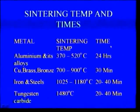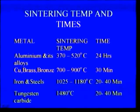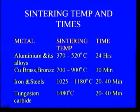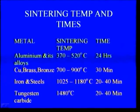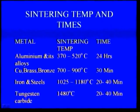Now we see the sintering temperature and times of different metals. For aluminum and its alloys, the sintering temperature lies between 370 to 520 degrees centigrade and the sintering time is approximately 24 hours. For copper and its alloys like brass and bronze, the sintering temperature lies between 700 to 900 degrees centigrade and the sintering time is nearly 30 minutes. For iron and steels, the sintering temperature lies between 1025 to 1180 degrees centigrade and the sintering time is 20 to 40 minutes. For tungsten carbide, the sintering temperature is 1480 degrees centigrade and the sintering time is 20 to 40 minutes.